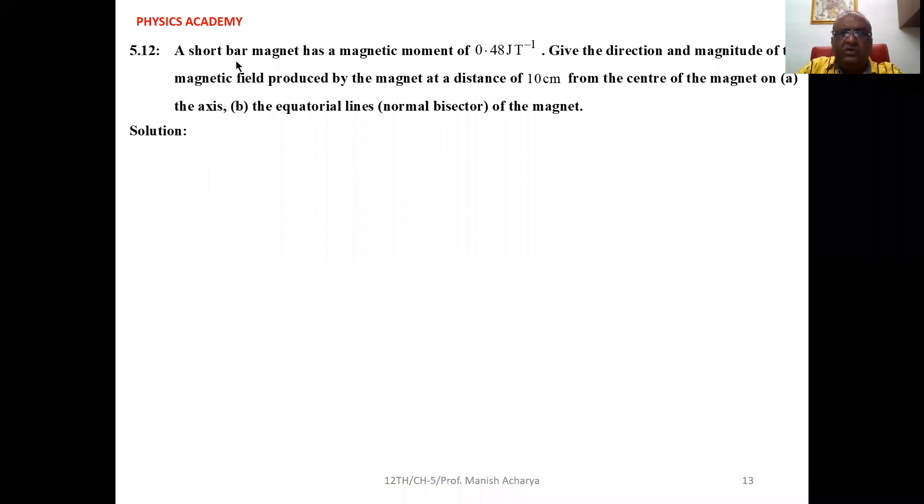5.12: A short bar magnet has a magnetic moment of 0.48 joule per tesla. Give the direction and magnitude of the magnetic field produced by the magnet at a distance of 10 cm from the center of the magnet on (a) the axis, (b) the equatorial lines of the magnet.